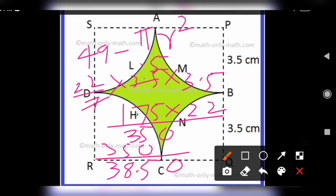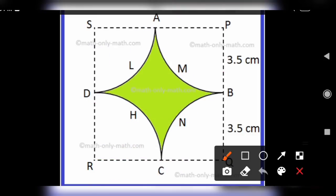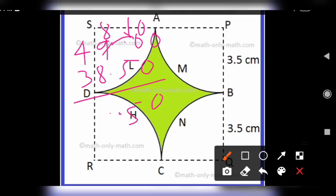49 minus 38.50. We can't, so get borrow, that is 10. 10 minus 5 is 5. Keep decimal point. This is 8. 10.50.